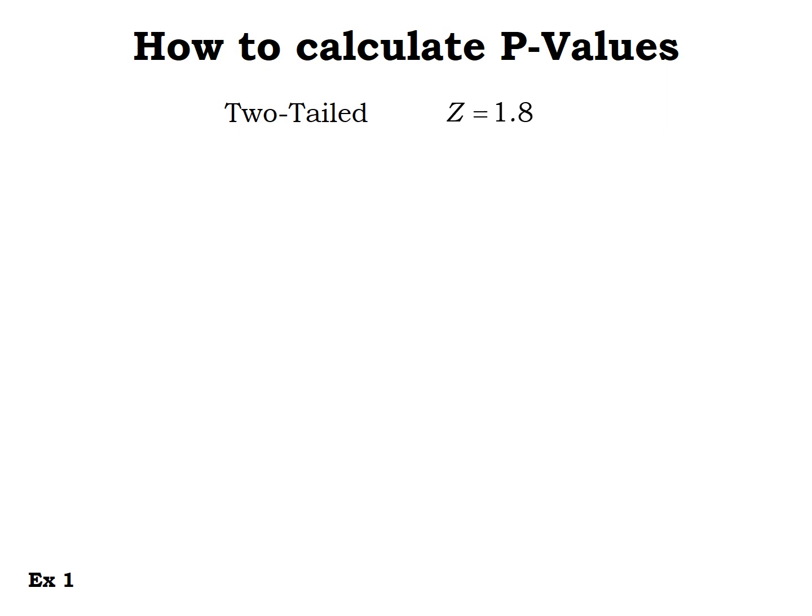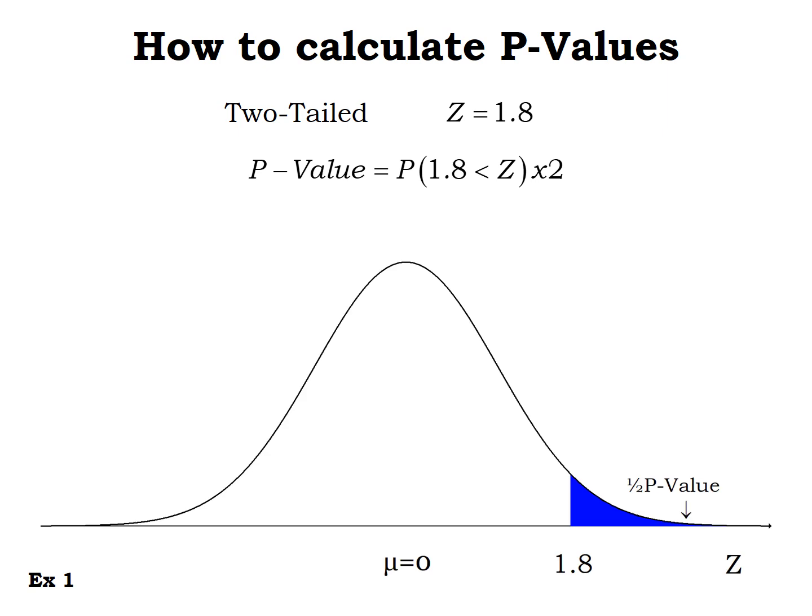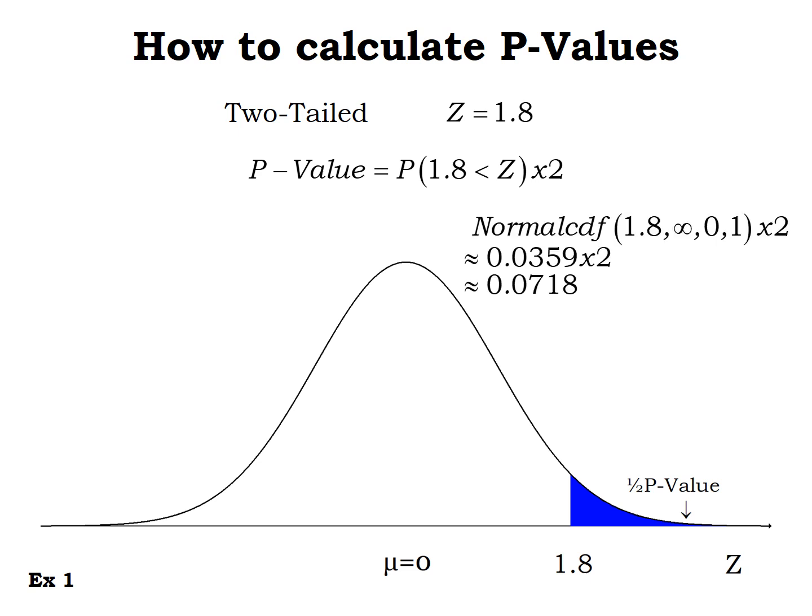For a two-tailed test with z-score 1.8, that z-score is in the right tail. The area to the right of 1.8 represents one of the two tails — half the p-value. We find the area to the right and double it. Since we already found the area to the right is 0.0359, the two-tailed p-value is 0.0718. Treat it like a right-tailed test, get 0.0359, then double it for the unseen left tail.